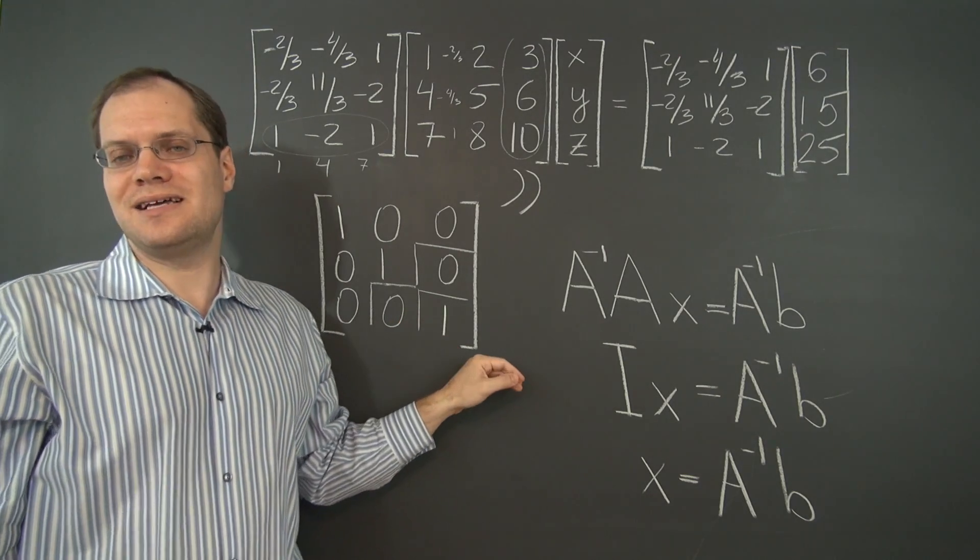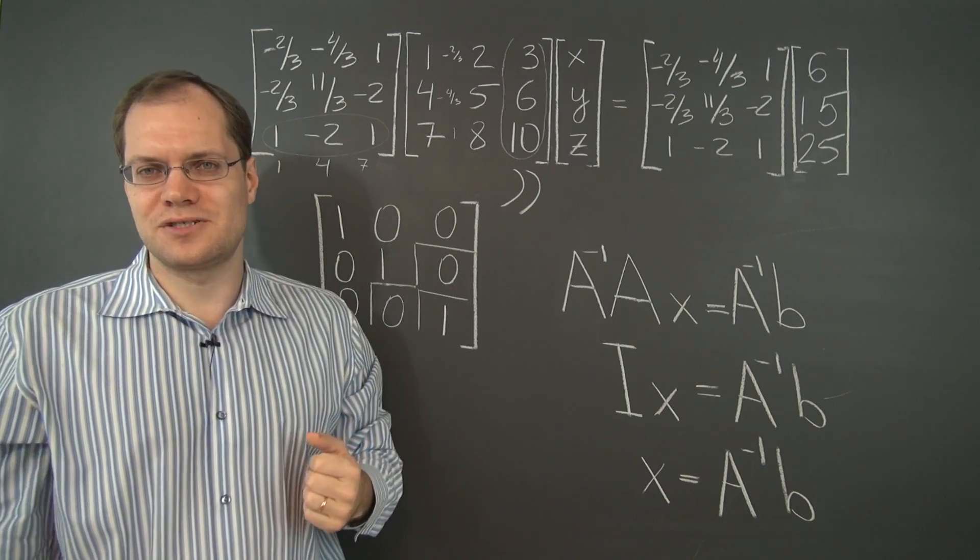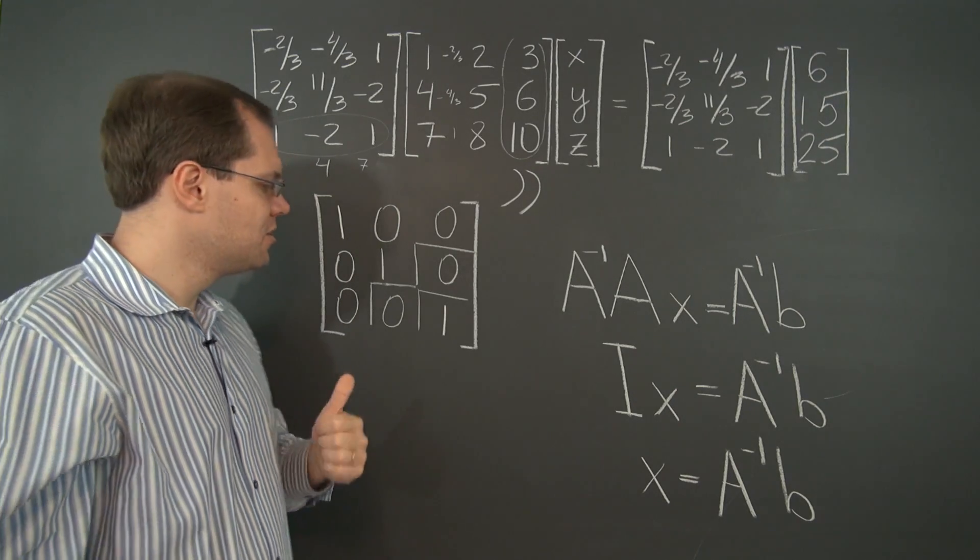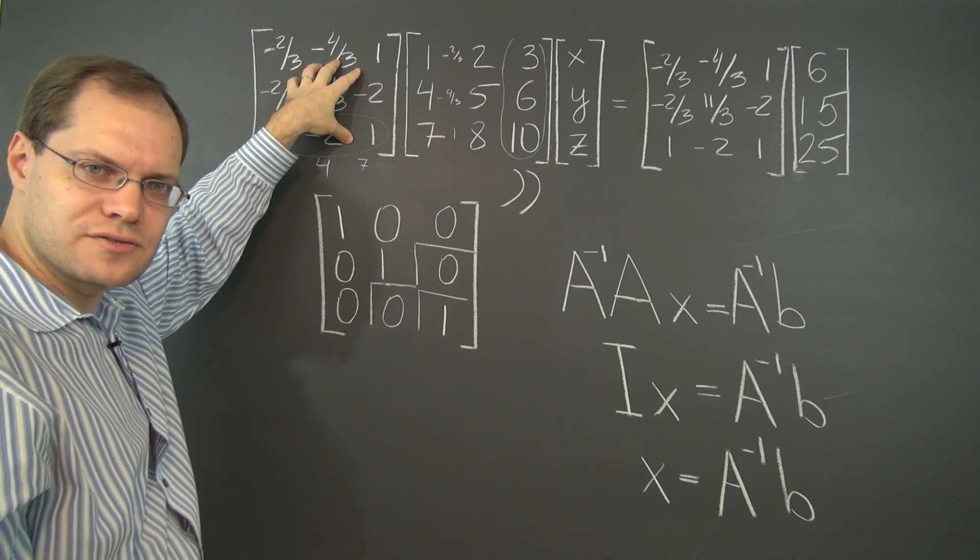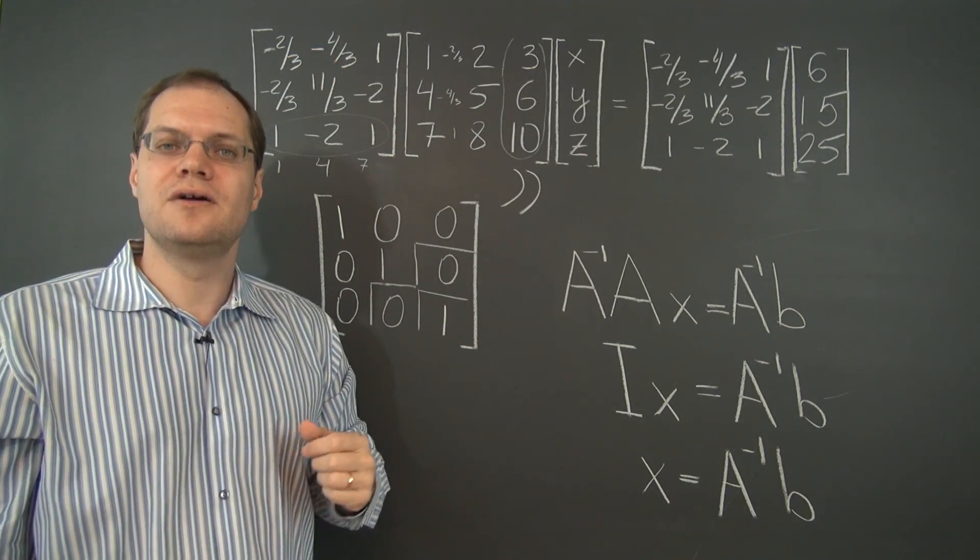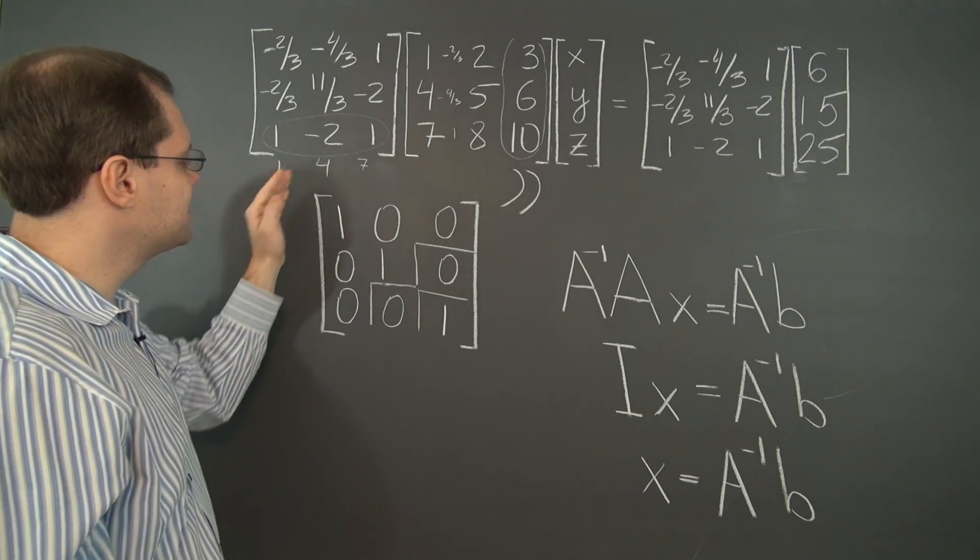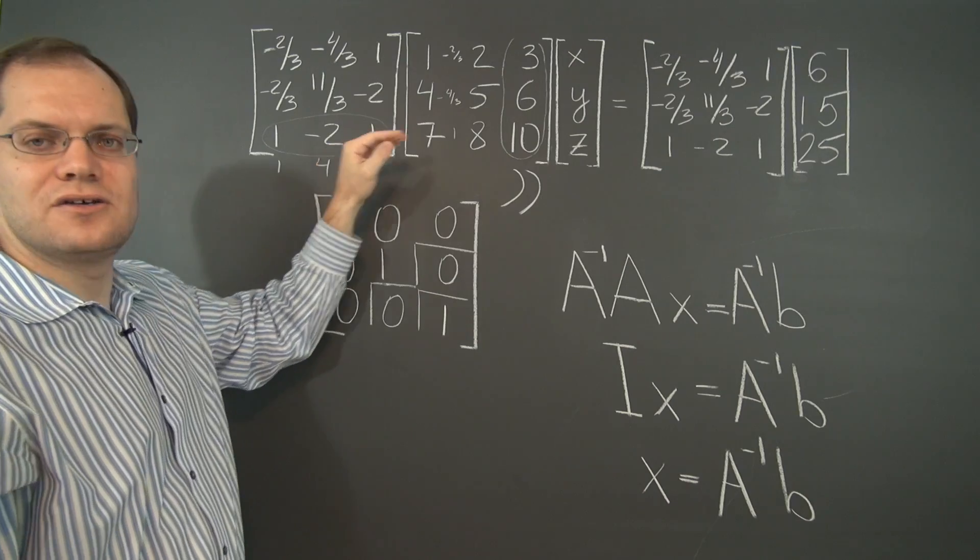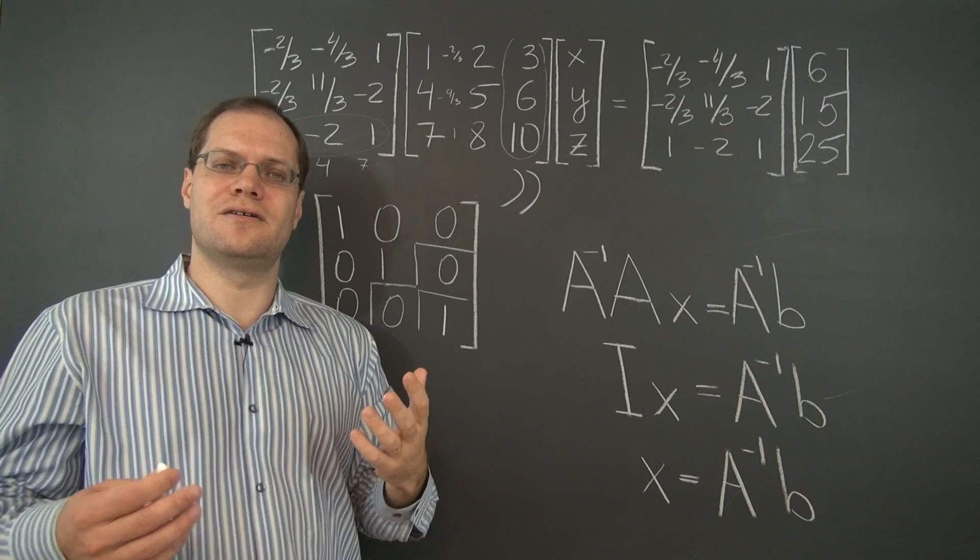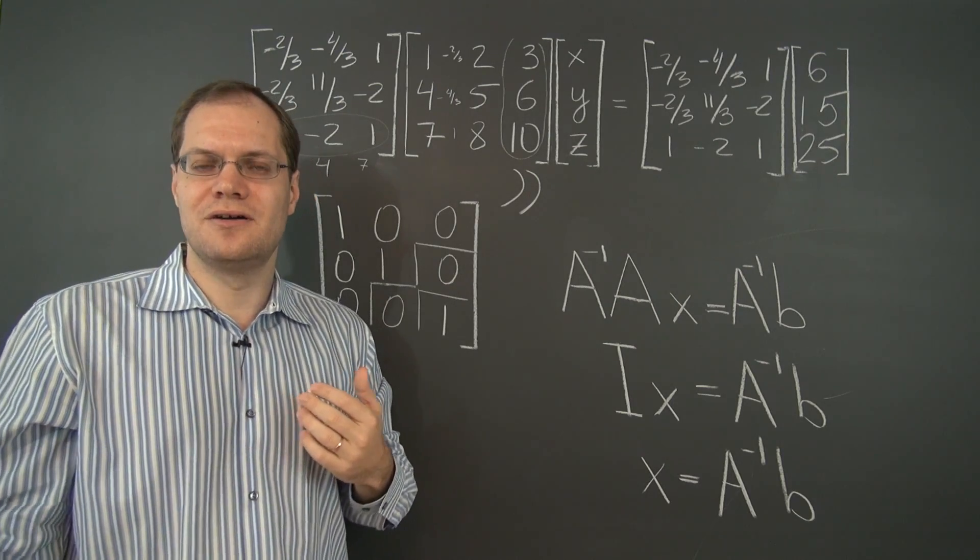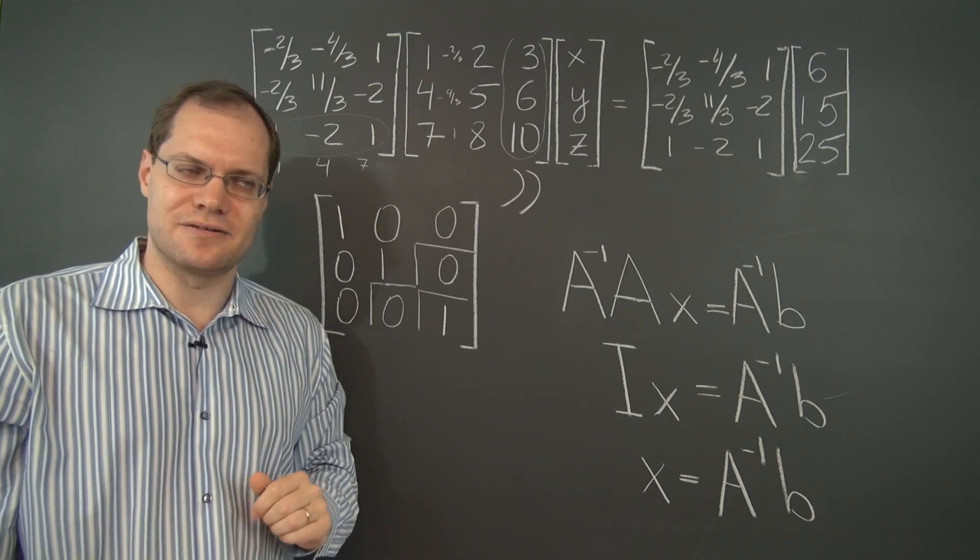So the result is the identity matrix. And we also took this calculation as an opportunity to practice the different perspectives on matrix multiplication, which is great. So this is indeed A inverse. And we obviously have to be careful. We should call it the left inverse of A, because we're multiplying on the left. So here's a situation where the order very much matters, unless there is another miraculous exception from non-commutativity. We'll investigate this later.